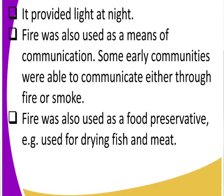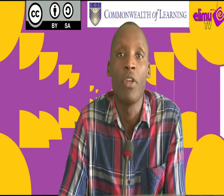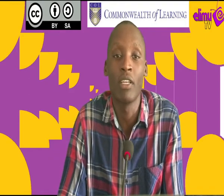Another use of fire was for lighting. During the night it was dark and man sometimes needed to see, so fire provided light during the night. Fire was also a means of communication in early times — early communities used fire and smoke to communicate. In Form 2 we'll look at communication in more detail, and we'll realize that fire and smoke were another means of communication.